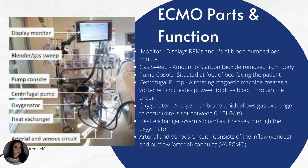The ECMO circuit has several key components. There's the display monitor, the blender or gas sweep, the pump console, the centrifugal pump, the oxygenator or gas exchanger, and the inlet and outlet venous circuits. The monitor displays the numbers we want to see — mostly what we're writing down hourly in the patient's chart — including the patient's RPMs and liters of blood pumped per minute. The liters per minute is really important; that's what we're looking at most of the time to see if the ECMO is working accurately.